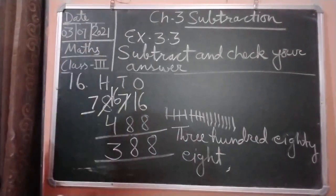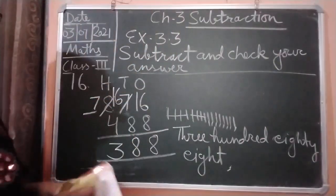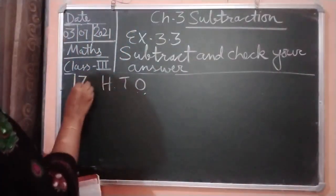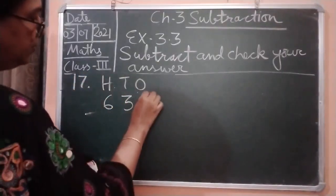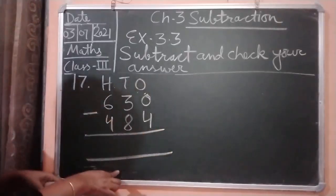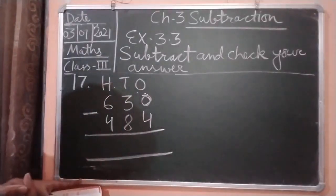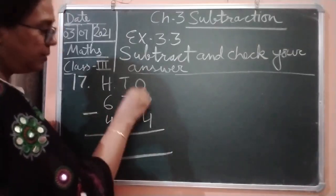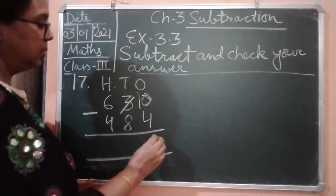Now we are moving to question number 17. Here you can see the number is 630, and we subtract 484. Here 0 minus 4: we will ask help from tens. Tens will give 1 ten to this 0 ones, so it will become 10. Now 10 minus 4, what do you get? 6. And here 2 tens are left.